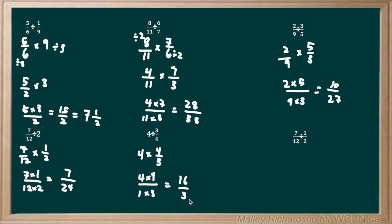Now this is an improper fraction, so it can be reduced into a mixed number. 3 goes into 16 evenly 5 times, so 5 is our coefficient out front. 5 times 3 is 15, and 16 minus 15 gives us 1. So our numerator of our fraction is 1, with a denominator of 3.